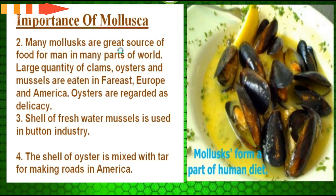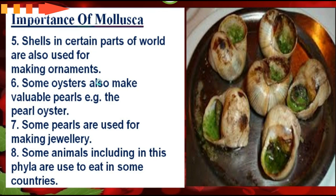Many molluscs are a great source of food for humans in many parts of the world. Large quantities of clams, oysters, and mussels are eaten across Europe and America. Oysters are regarded as delicious. Shells of freshwater mussels are used in the button industry. The shell of the oyster is mixed with tar for making roads in America. Shells in certain parts of the world are also used for making ornaments. Some oysters produce valuable pearls — known as pearl oysters — used for making jewelry. Some animals in this phylum are also eaten in some countries.